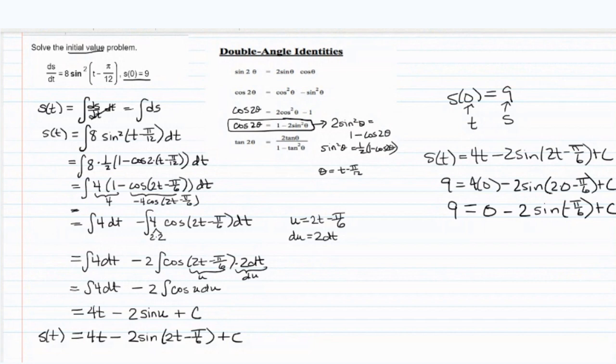So 9 is equal to 0 minus 2 times the sine of negative pi over 6 plus c. The sine of negative pi over 6 is going to be, we're in the fourth quadrant where the sine is negative. Sine of pi over 6 is 1 half. So we're going to have 9 equals negative 2 times negative 1 half plus c.